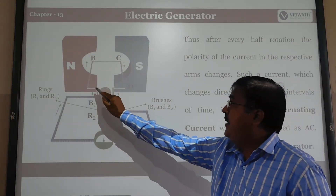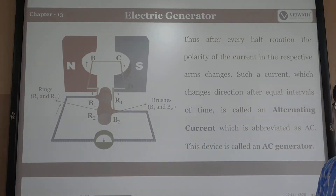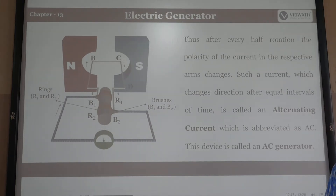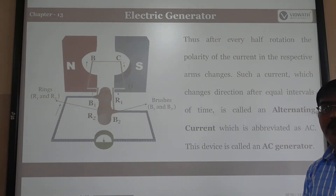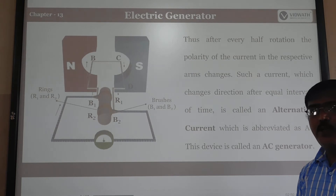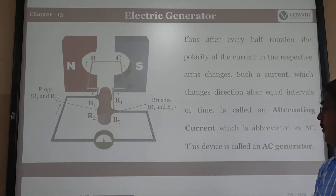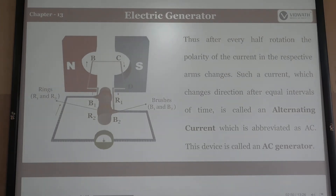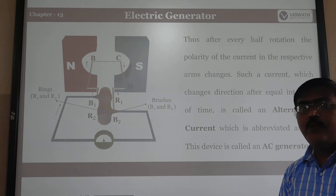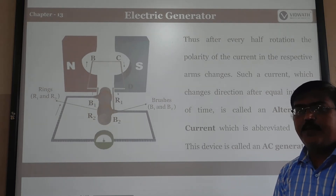Every half rotation, the current changes direction after equal intervals of time. This is called alternating current, abbreviated as AC. This device is also called an AC generator. The flow of current changes direction every half rotation, which is why it is called AC current.